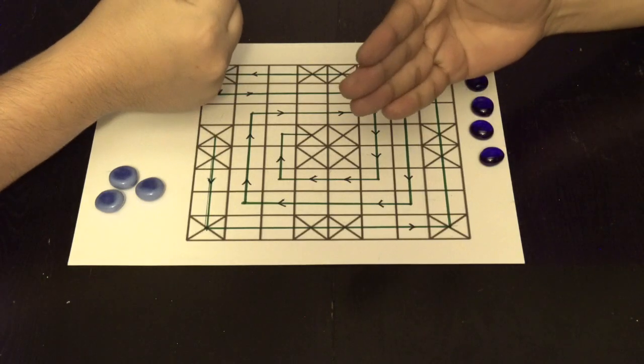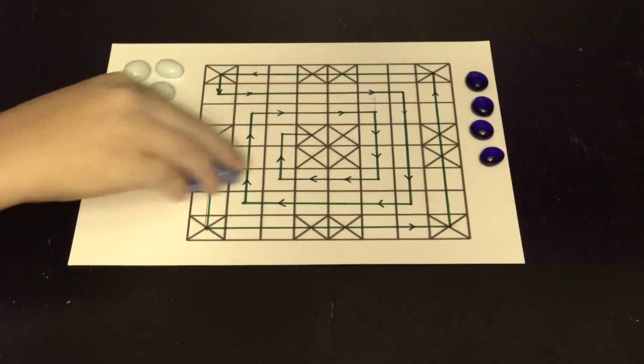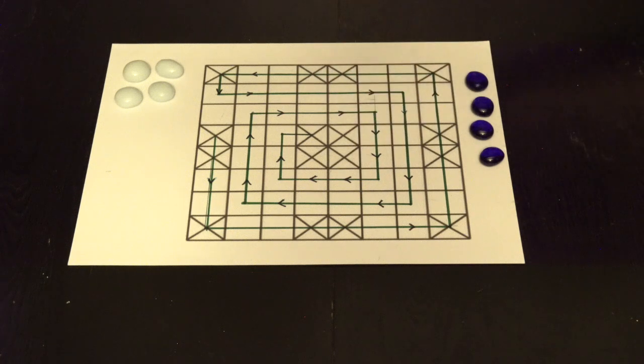Players choose how they'd like to start their game. In this example, both players decided on rock, paper, scissors.